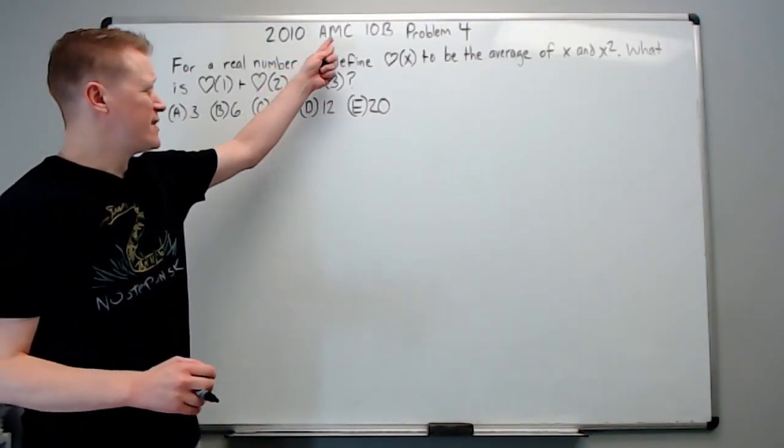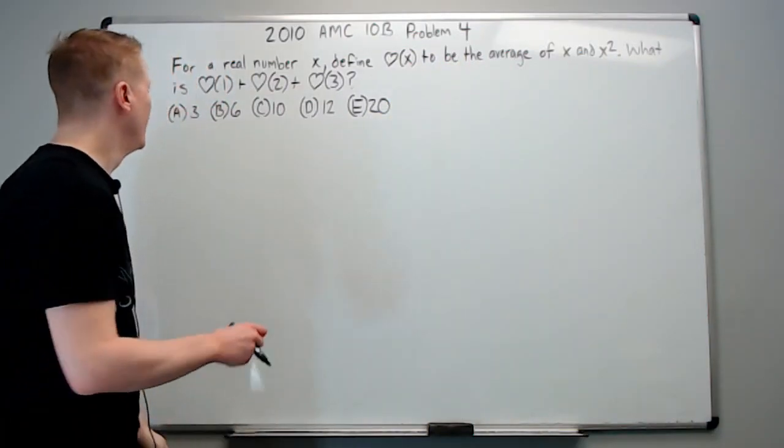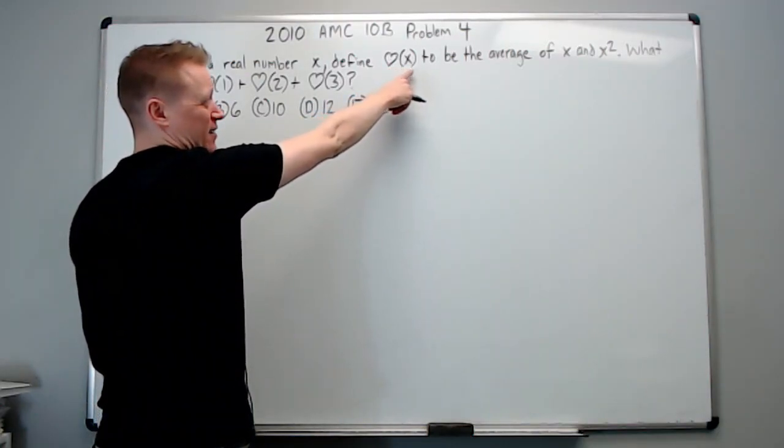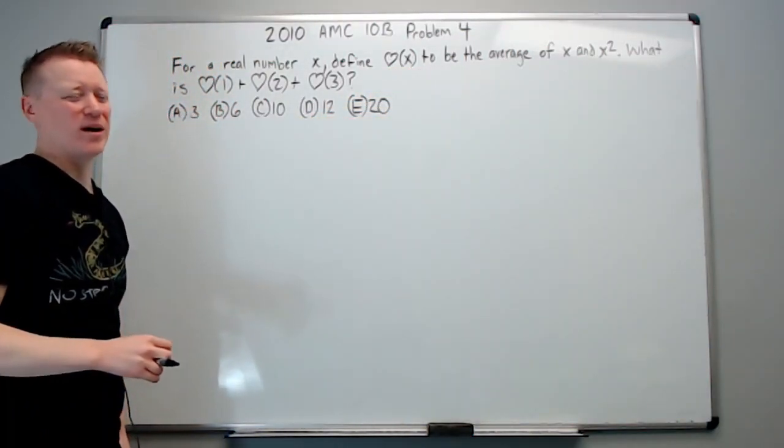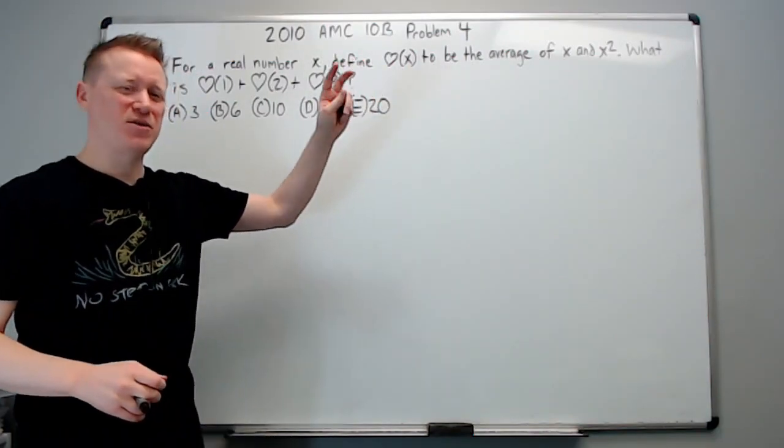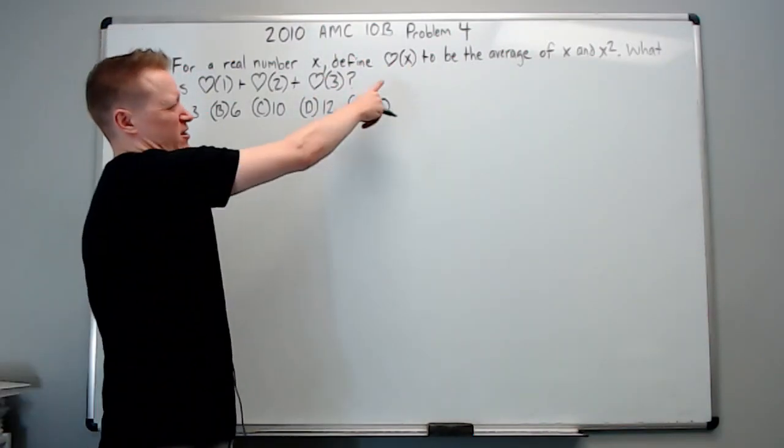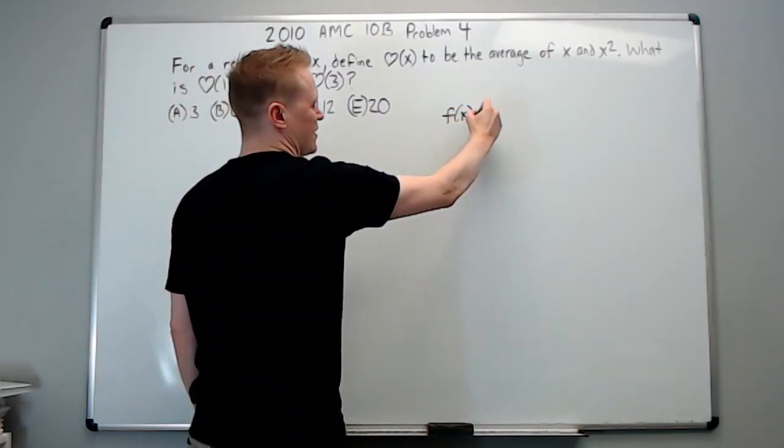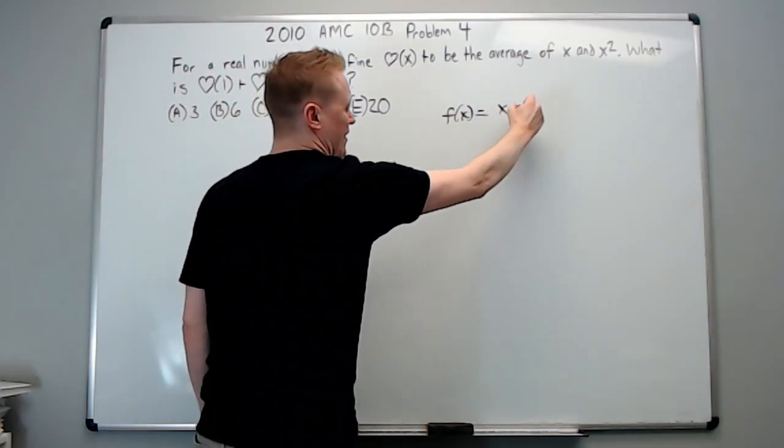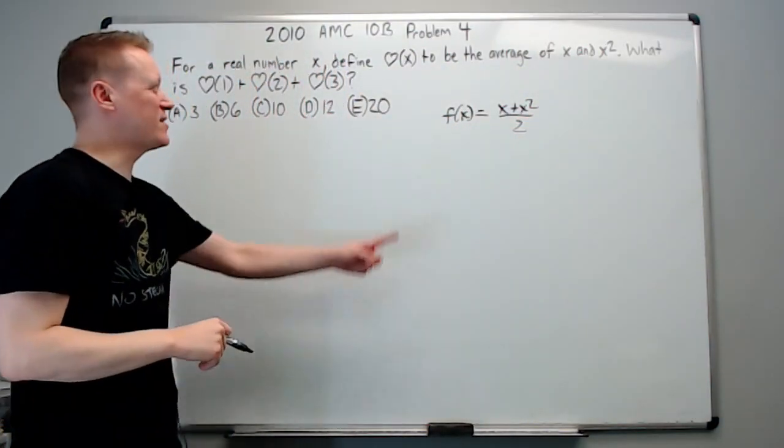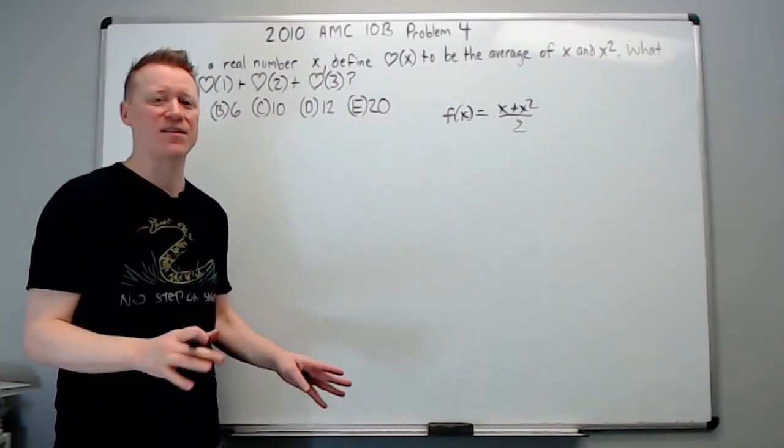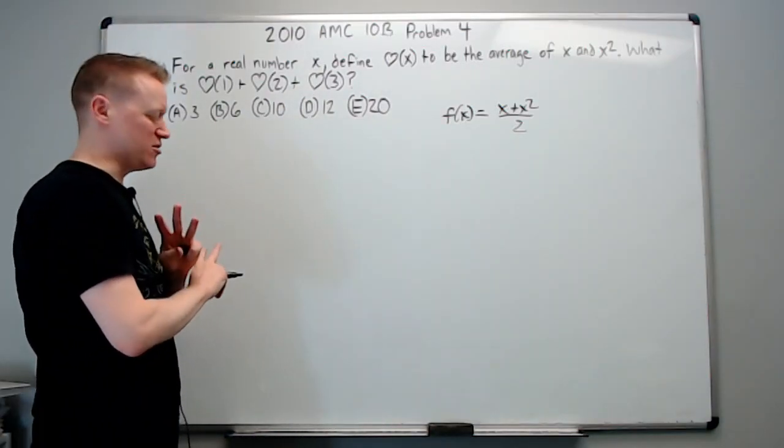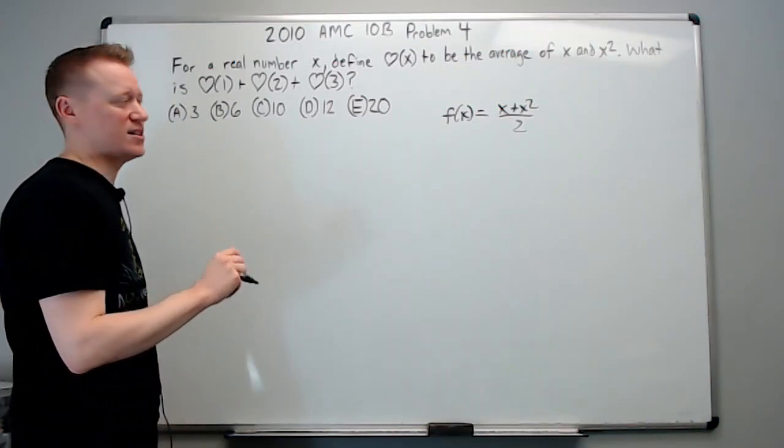Okay, and now for the 2010 AMC 10B problem four. For a real number X, define heart symbol X to be the average of X and X squared. A lot of kids used to get really freaked out by this. Most of you are probably pretty comfortable because they're like, Oh, I've never seen that. Who cares? No one's seen it. It's no different than saying F of X equals the average of X and X squared. You could say it that way too, but they just use a heart symbol instead. It means absolutely nothing outside of this problem. So nobody else knew what it was before reading that either. So there's no reason to panic. You're equipped with exactly as much knowledge as anybody else.